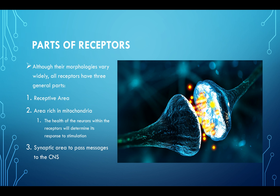All receptors have three general parts: a receptor area, an area that's very rich in mitochondria, and then the synaptic area to pass messages to the CNS. Mitochondrial health is important — not just providing the therapy, but making sure the health of the neuron is there so that it can appreciate what you're doing in the clinic and increase the chances of creating synaptic plasticity.